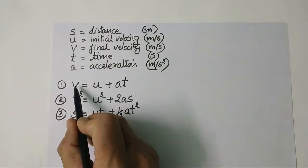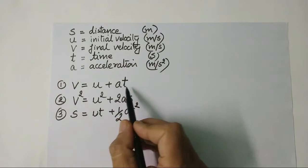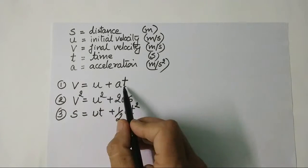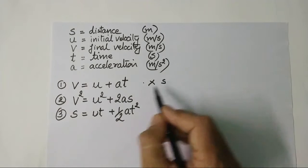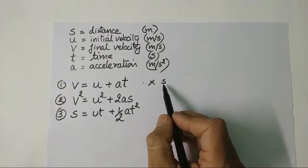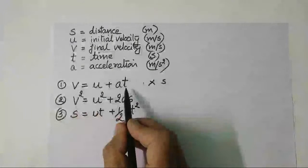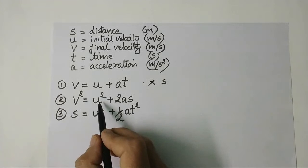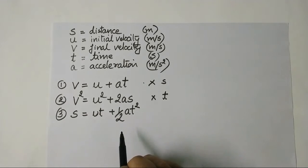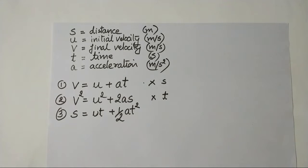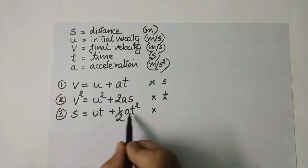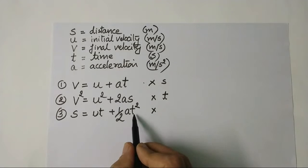The first equation v equals u plus at contains v, u, a, and t — it is used when distance s is not involved. The second equation v squared equals u squared plus 2as does not have t, so it is used when time is not given or not needed. The third equation s equals ut plus half at squared does not have final velocity v.